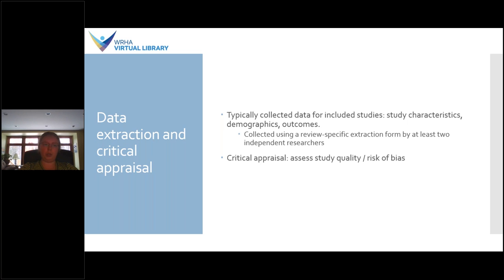Once screening is done, it proceeds to data extraction and critical appraisal. Again, this is usually done by at least two independent researchers using a review-specific extraction form that lays out the study characteristics, demographics of included subjects, and the outcomes of the study. This is also the stage where critical appraisal happens — we have done a full webinar on that topic I recommend you check out. Typically it involves using a particular checklist to assess the quality and risk of bias in each study, such as problems with randomization or blinding that could potentially introduce bias.